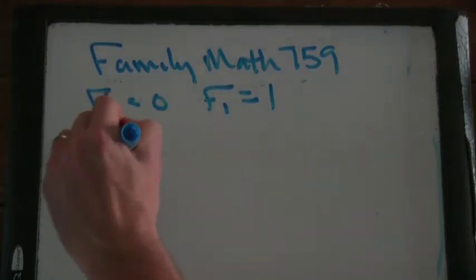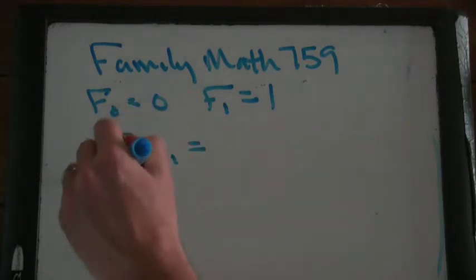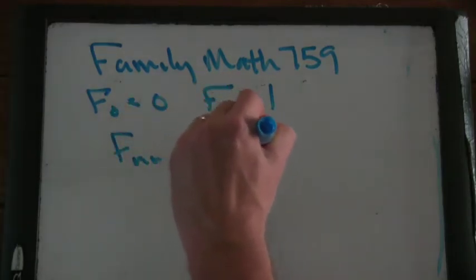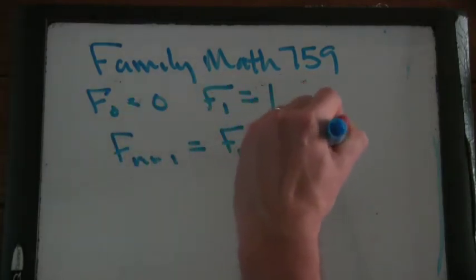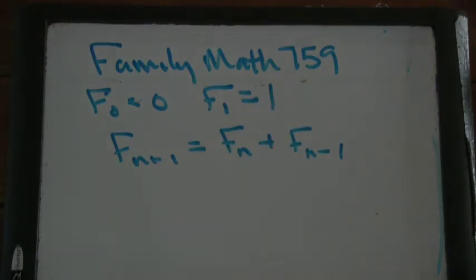So we have this equation, Fₙ₊₁. Fibonacci number n plus 1 equals the Fibonacci number n plus the Fibonacci number n minus 1. And it's not at all clear what we would do to solve something like this. But we did see at least that it got big very quickly.